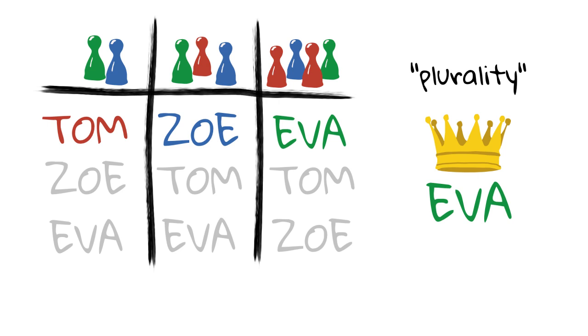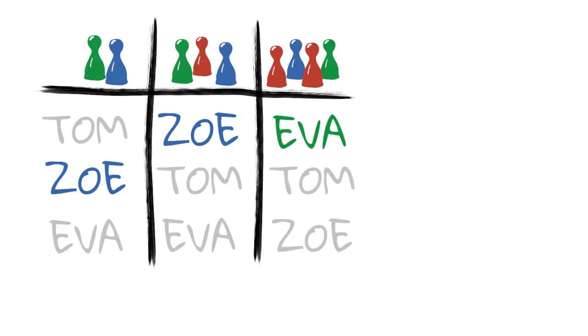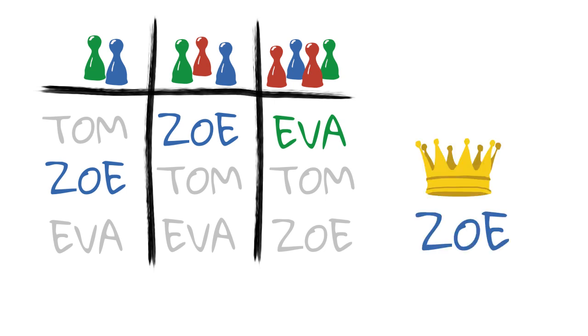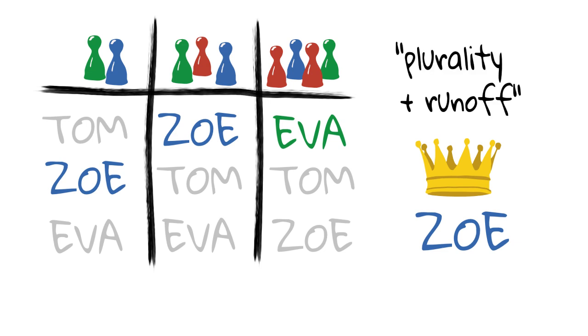However, Eva did not win the absolute majority, which would be at least five votes. The members agree to let a run-off election between Zoe and Eva decide who should be the new president. This is the result. The two voters who previously voted for Tom now vote for Zoe, who has the absolute majority with five votes. In plurality voting with run-off, Zoe is the winner.